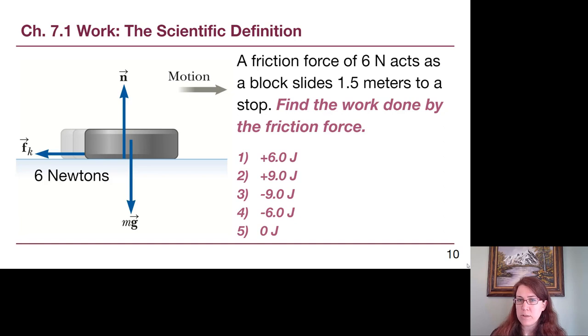Okay. So another example for us. A friction force here is acting against the motion because that's what friction force does. We're moving to the right on the slide. Friction is acting to the left. A friction force of six newtons is acting on a block as it slides 1.5 meters and then it comes to a stop. So find the work done by the friction force. And again, pause the video, think through the options, write stuff down and put it in your calculator if you need to. But figure out what answer you want to commit to before we talk through the correct answer.